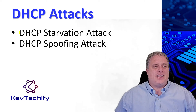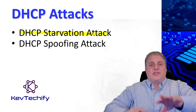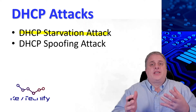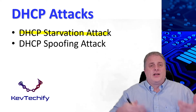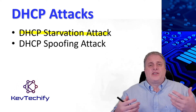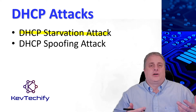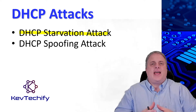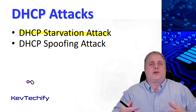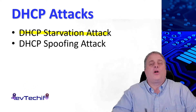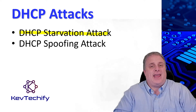The first one is DHCP starvation attack. The goal of this attack is a denial of service for connecting clients. It requires an attacker tool such as Gobbler. The starvation attack happens when a flood of requests exhausts all available IP addresses, and the DHCP server has no more IP addresses to hand out.